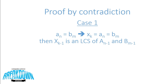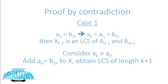Let's take a look at case one, where the last character in A equals the last character in B. Consider the last character of the longest common subsequence. If it is not equal to A of N or B of M, then we can simply add A of N — which is the same as B of M — to the LCS, because these characters are the same. This would give us an LCS of length K plus one, but that forms a contradiction, because we assumed X is in fact an LCS. So this completes the first half of this proof.